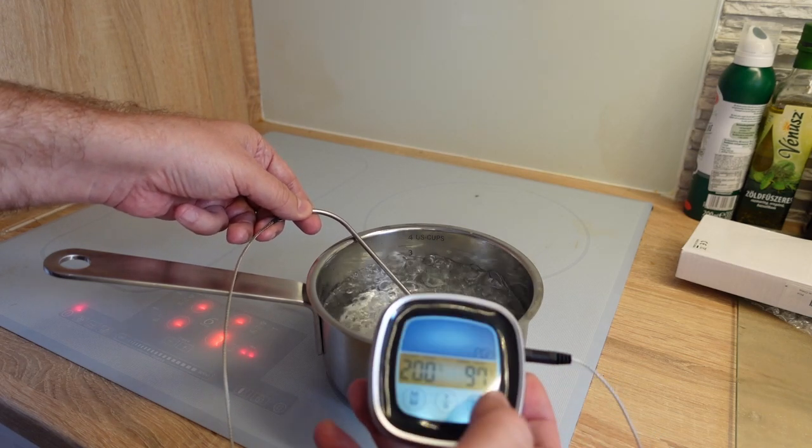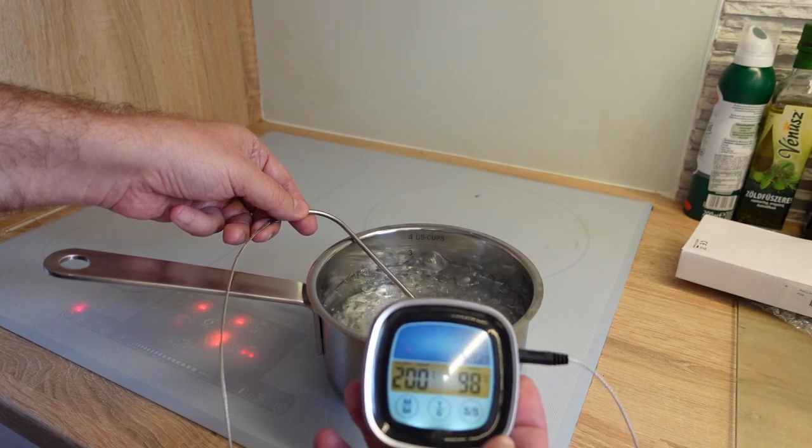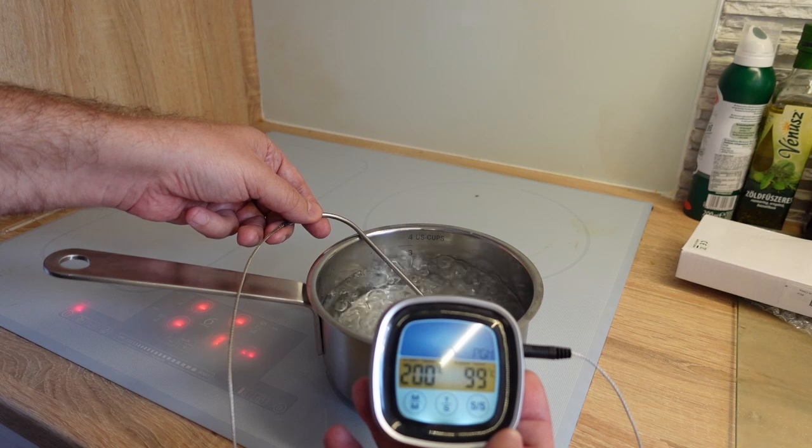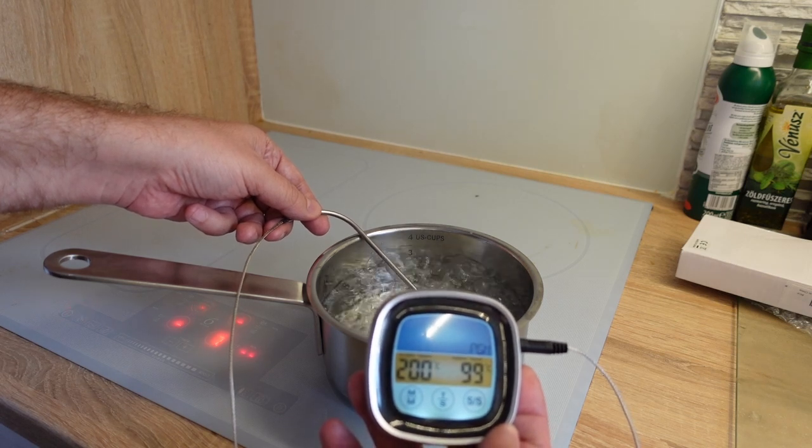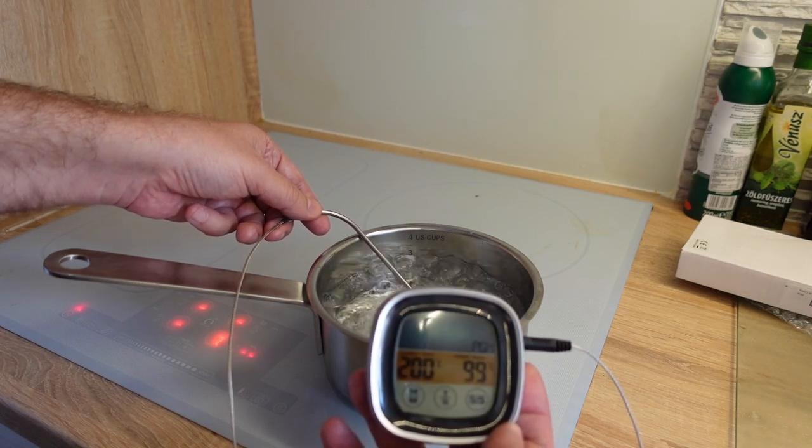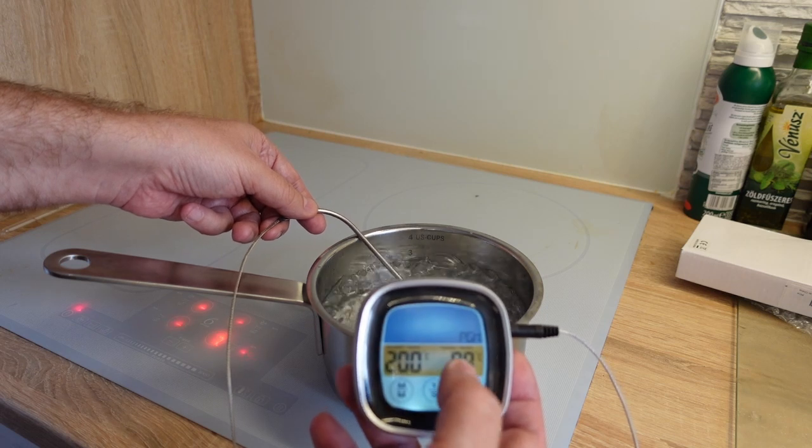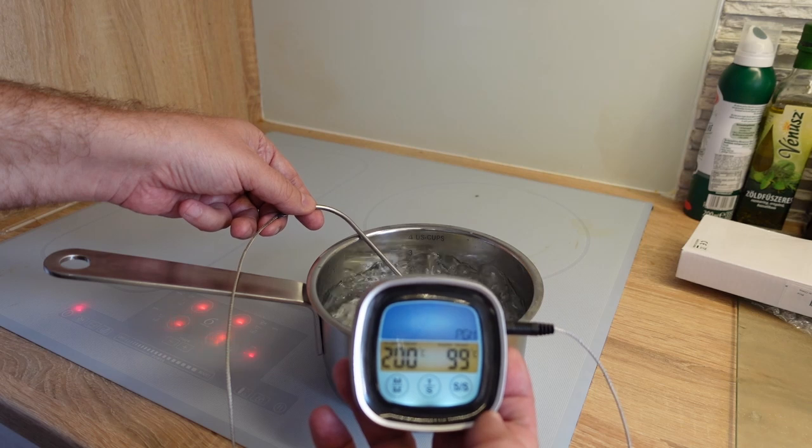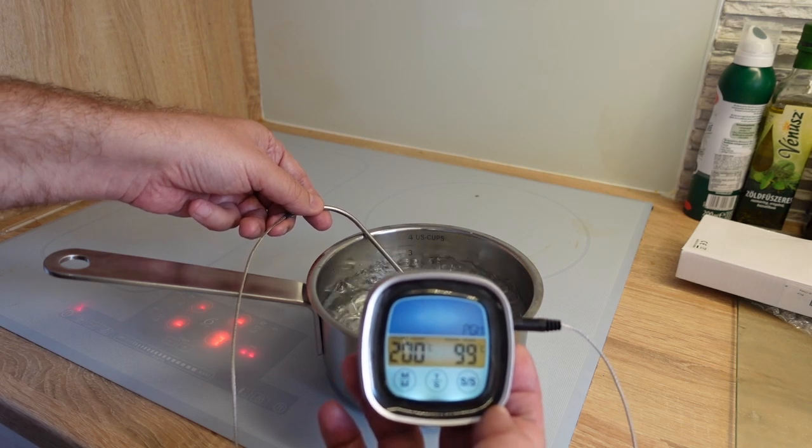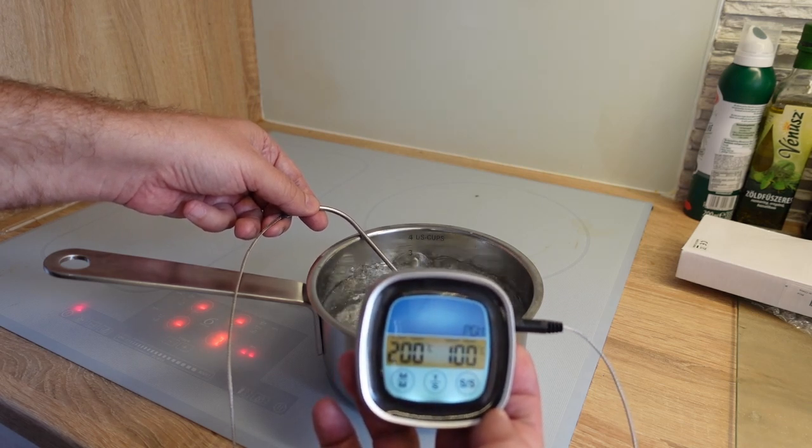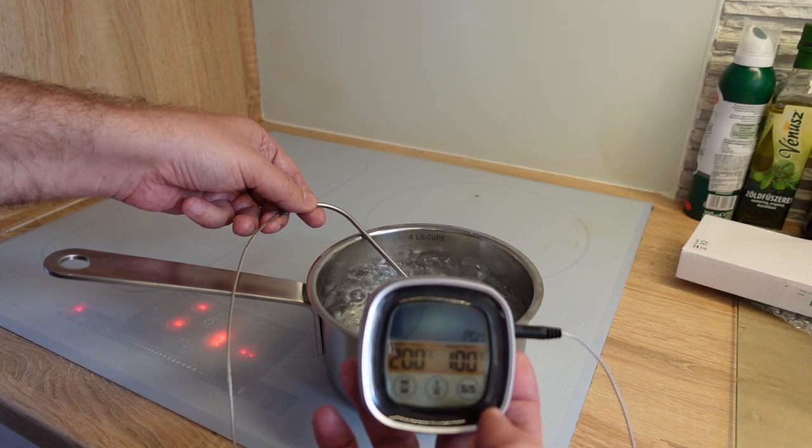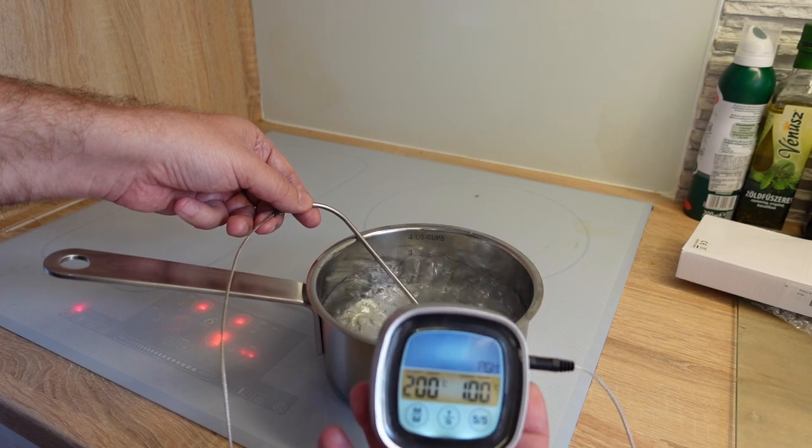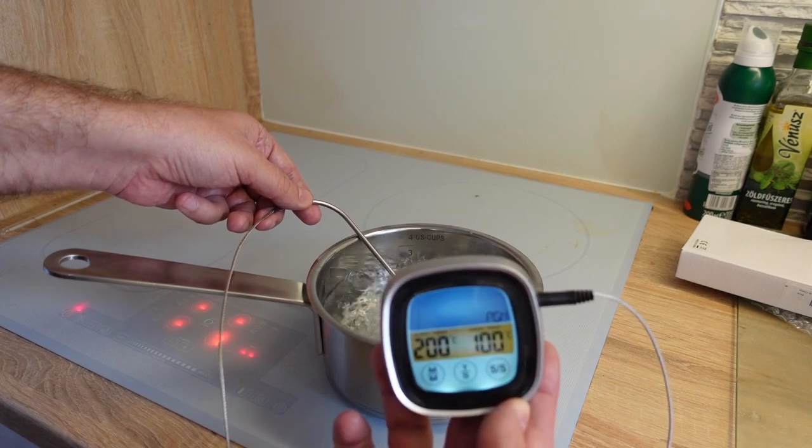It immediately picked up this temperature so it reacts very fast. I don't want to speed up this part of the video so you can see when it will get to 100 degrees Celsius. I hope it's visible on camera, 99 degrees Celsius. So I'm very happy with the accuracy of this thermometer. And here it is, exactly 100 degrees Celsius, the temperature of the boiling water at atmospheric pressure. So accuracy is perfect so far.